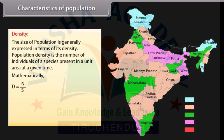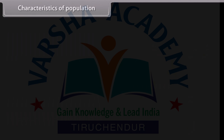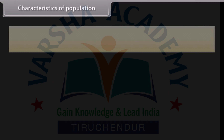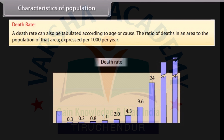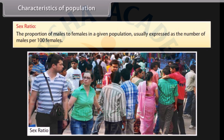Population density is the number of individuals of a species present in a unit area at a given time. Mathematically, D = N/S, where D stands for population density, N denotes the number of individuals of a species at a specific time, and S represents the number of units of space. Birth rate is the ratio of live births in an area to the population of that area, expressed per 1000 population per year. Death rate is the ratio of deaths in an area to the population of that area, expressed per 1000 per year. Sex ratio is the proportion of males to females in a given population, usually expressed as the number of males per 100 females.